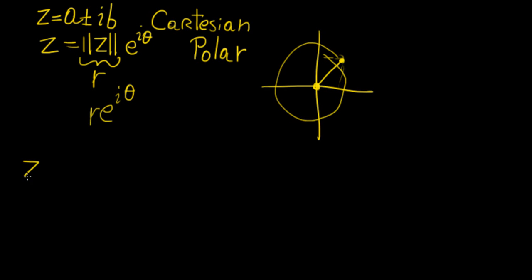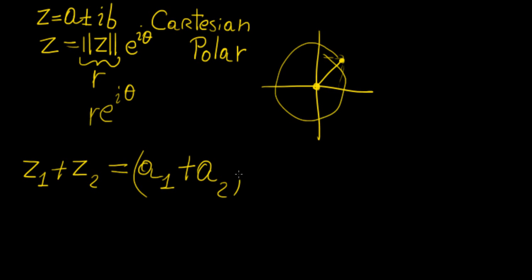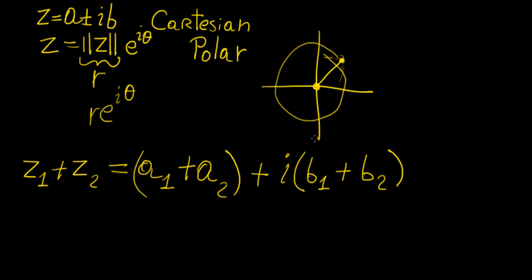If we want to add two complex numbers together, the real parts add together and the imaginary parts add together, because we cannot combine real and imaginary parts. So we get a1 plus a2 for the real part and b1 plus b2 for the imaginary part. For subtraction, it's the same concept — we simply subtract the two quantities instead.